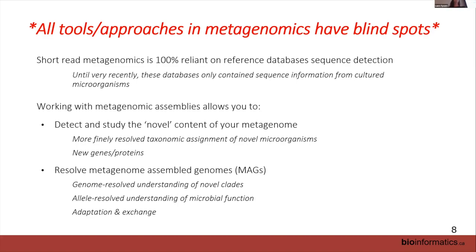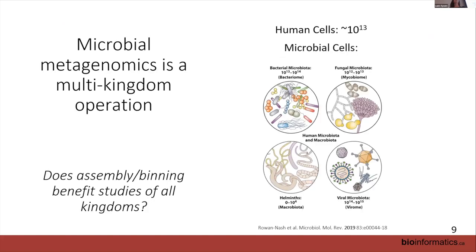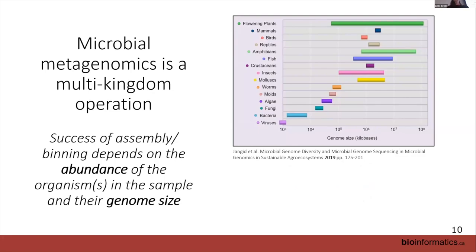Remember those pretty pictures of microbes — they're multi-kingdom. We have to think about this when talking about MAGs and assembly. We have a multi-kingdom operation with all different components at different abundances. Does assembly and binning benefit studies of all kingdoms? If you're interested in fungi or viruses, does this technique work for you? The answer is complicated — it depends on how you prep your sample and how abundant those things are.